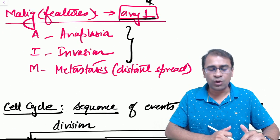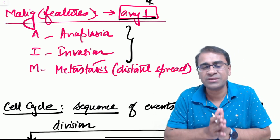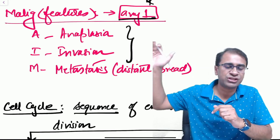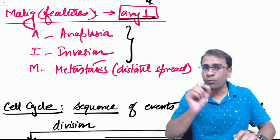What are the features of malignancies? Use the mnemonic AIM. Any one of them is sufficient to call it malignant: it can be anaplasia, it can be invasion, or it can be metastasis.